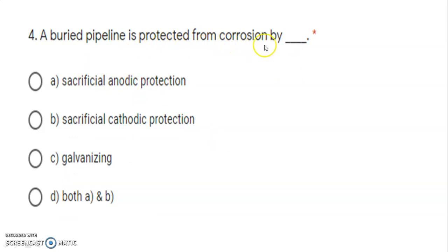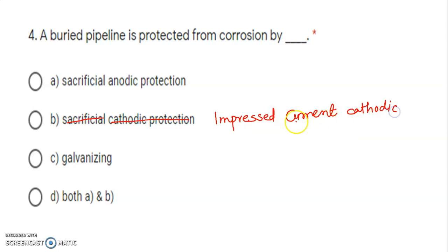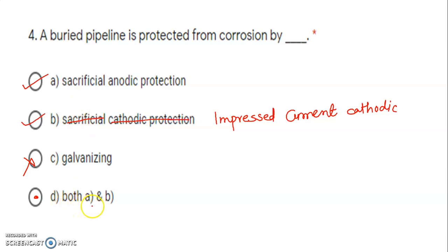Next: a buried pipeline is protected from corrosion by — note a correction: option B is impressed current cathodic protection. A buried pipeline can be protected by sacrificial anodic method (option A) and also by impressed current cathodic protection (option B), where external current is applied. Galvanizing is not used to protect buried pipelines. So the correct answer is D — both A and B.